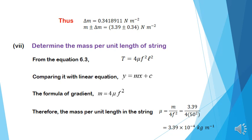Roman 7: determine the mass per unit length of the string. From equation 6.3, the tension in the string is given by T = 4μf²L². Comparing with the linear equation y = mx + c, the gradient formula is m = 4μf². Rearranging, the mass per unit length is μ = m / (4f²). By substituting the values of m and f into the formula, the value of μ obtained is 3.39 × 10⁻⁴ kg/m.